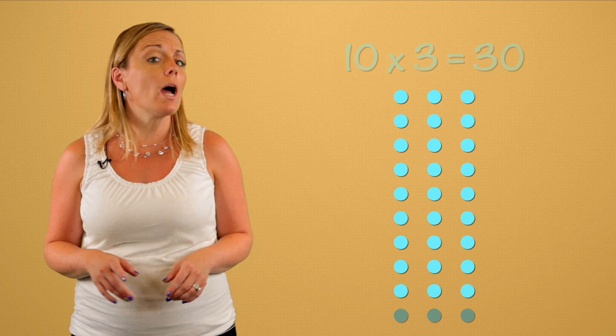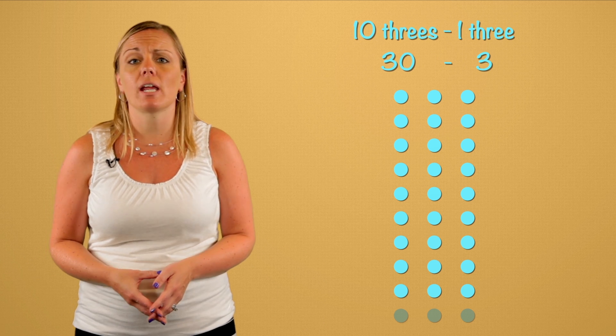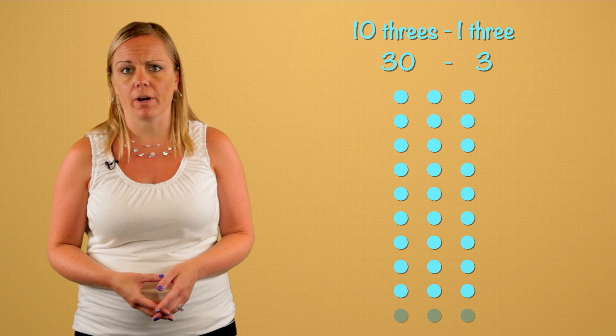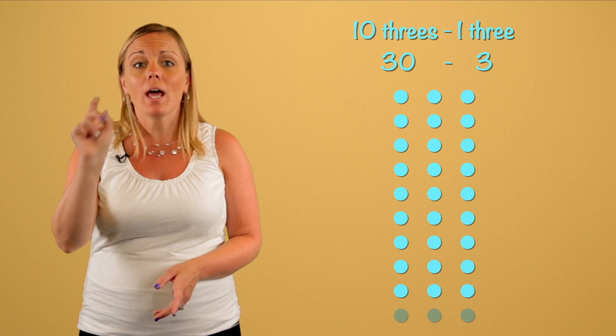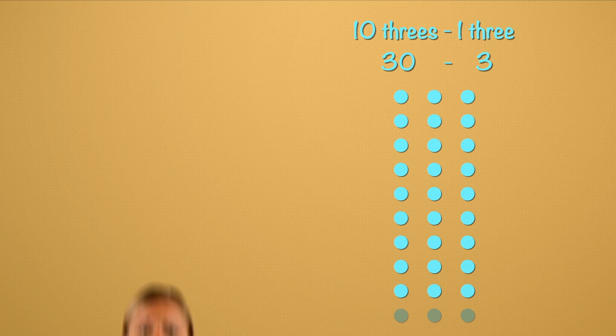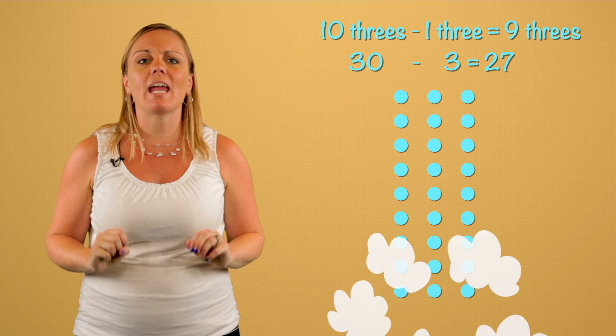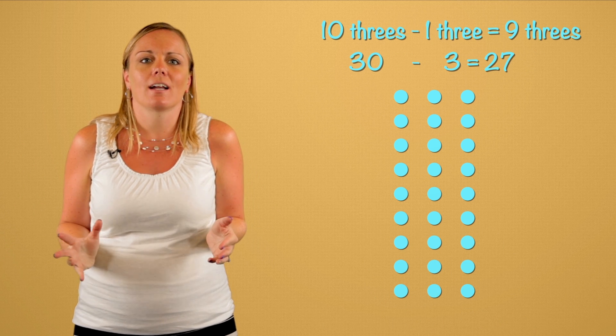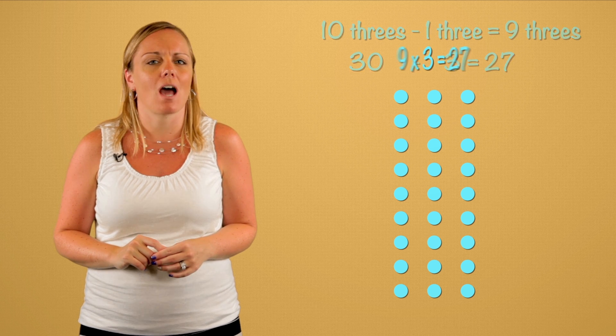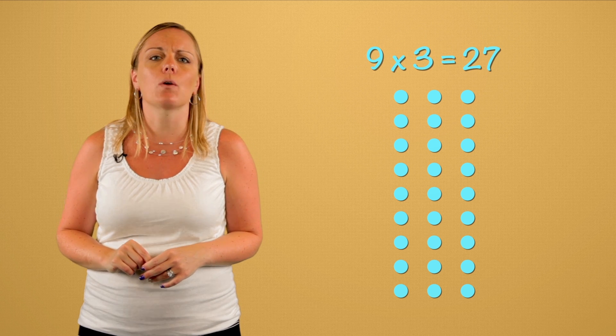Nine rows of three is one less three than ten rows of three. Ten threes minus one three. And what is ten threes minus one three? We've made our tenth row disappear. And now we're left with nine times three equals twenty-seven.